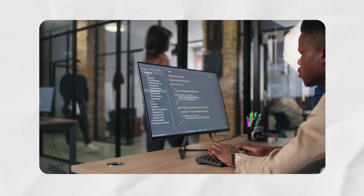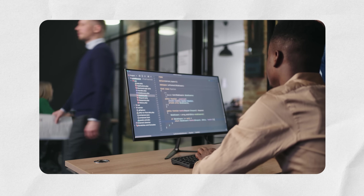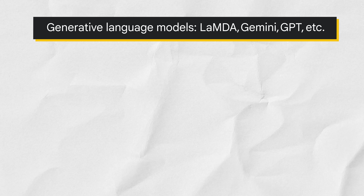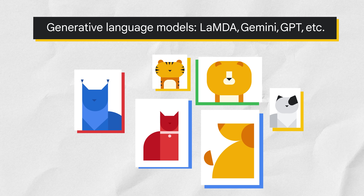We've come a long way from traditional programming to neural networks to generative models. In traditional programming, we used to hard code the rules for distinguishing a cat. In the wave of neural networks, we could give the network pictures of cats and dogs and ask, is this a cat? And they would predict a cat. In the generative wave, we as users can generate our own content, whether it be text, images, audio, video, or more. Models like Gemini, Google's multimodal AI model, or LaMDA, language model for dialogue applications, ingest very large data from multiple sources across the internet and build foundation language models we can use simply by asking a question — whether typing it into a prompt or verbally talking into the prompt itself. When you ask it, what's a cat? It can give you everything it has learned about a cat.